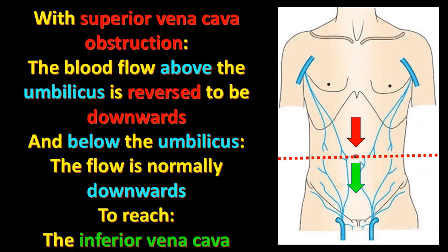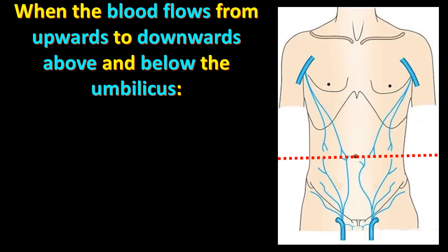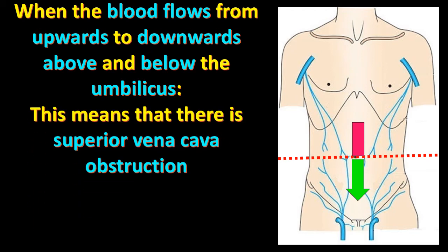Both the upper and lower halves are drained to the inferior vena cava. When blood flows from upwards to downwards both above and below the umbilicus — part of it reversed (red arrow) and part in normal direction (green arrow) — this means there is superior vena cava obstruction.